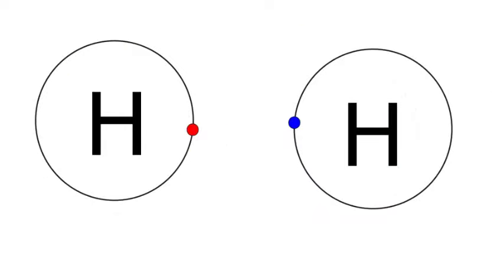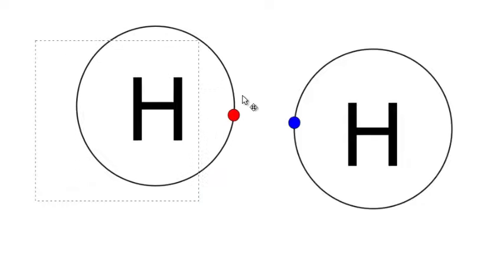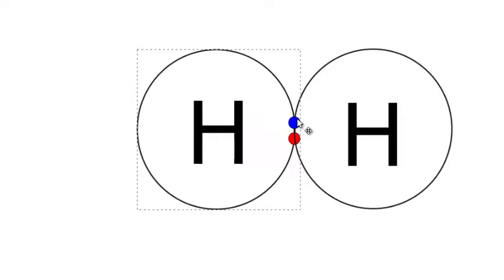But what if we had two hydrogen atoms bonding? For hydrogen, which only needs two valence electrons to have a full outer shell, the hydrogen would join with another hydrogen to form a chemical bond.